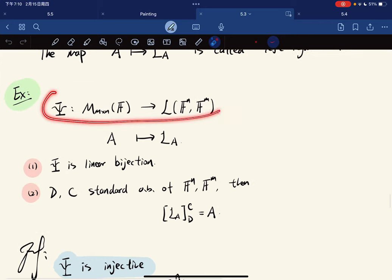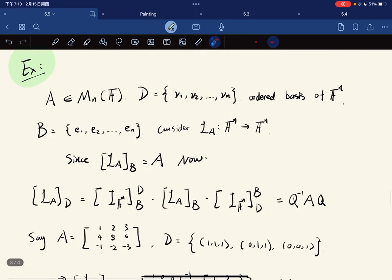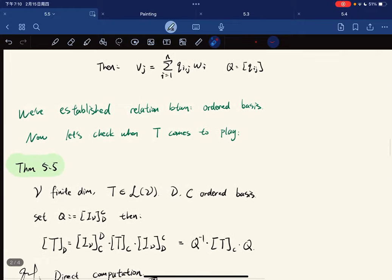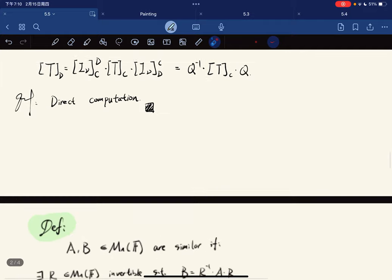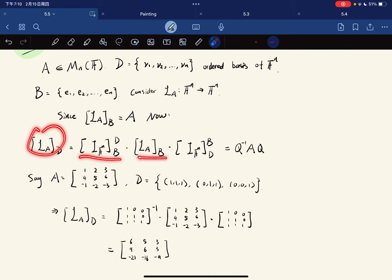We know that this map is a linear bijection. Since we have this, we just apply our theorem, which gives this is equal to this times this times this. We swap them and change D to B.